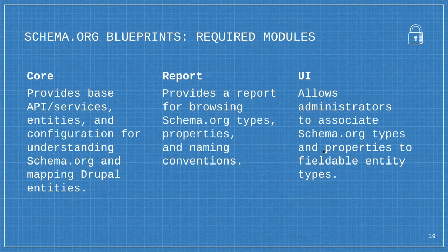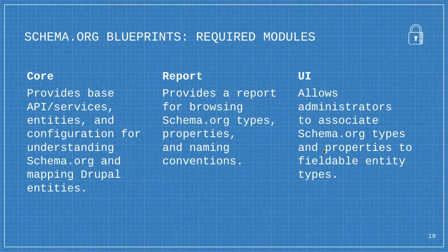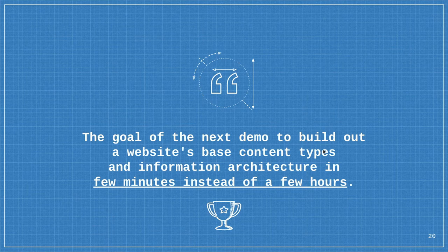The schema.org blueprints module takes a schema.org-first approach to building content models and structured data in Drupal. There's a core module that gets an understanding of schema.org by pulling in their spec and setting up configuration — how to map data, what types of data to map. On top of that I'm building a series of sub-modules. The report module makes schema.org data clearly available in Drupal so you can browse it, and the UI allows administrators to associate schema.org types and properties to fieldable entity types in Drupal.